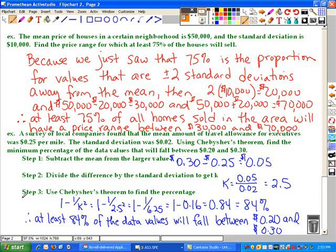Then in step three, we're going to substitute this in Chebyshev's theorem to find the percentage. So 1 minus 1 over K squared for this problem would be 1 minus 1 over 2.5 squared because we found K to be 2.5. When we work all of that out, then we get 0.84, and that gives us 84%. Therefore, at least 84% of the data values will fall between $0.20 and $0.30.